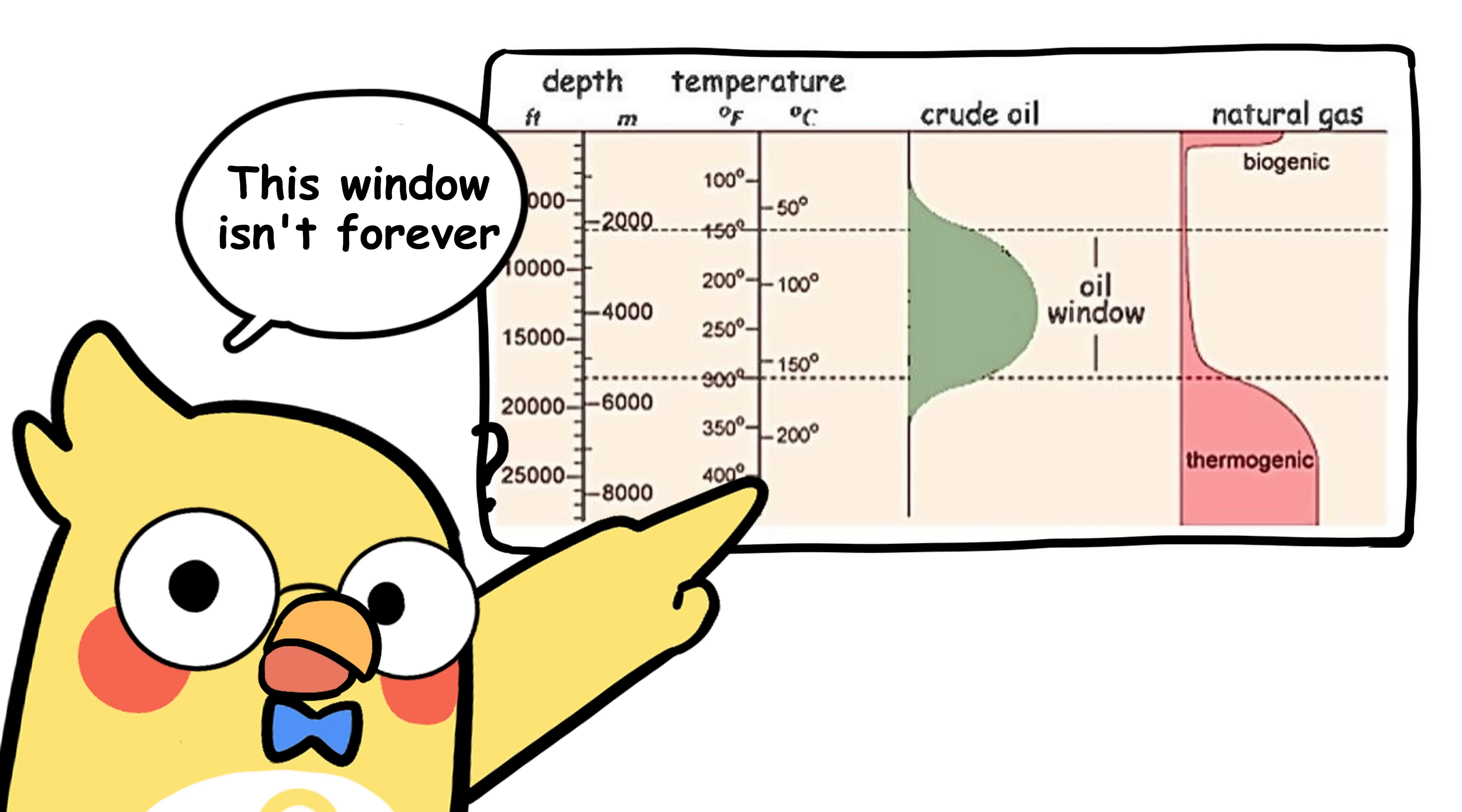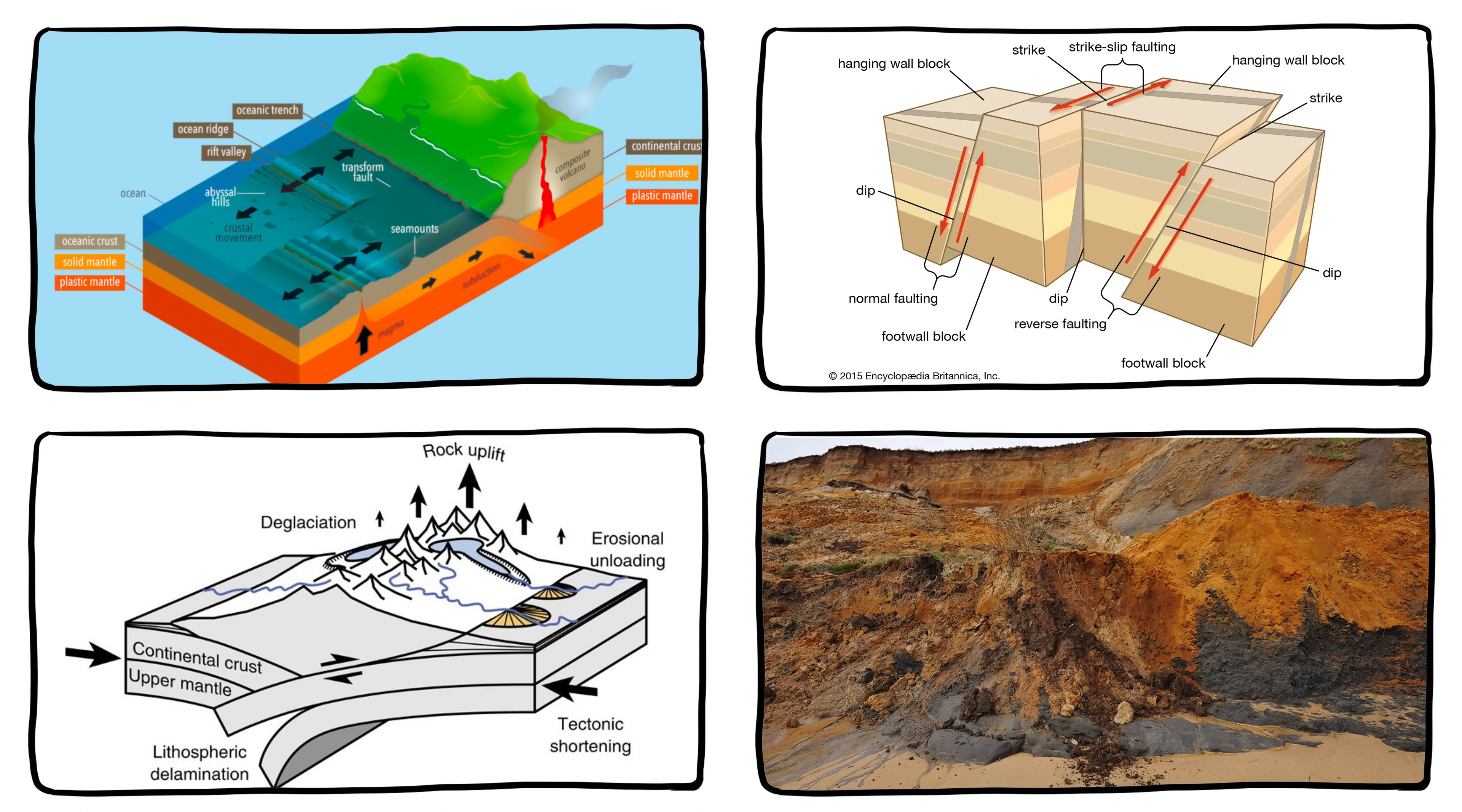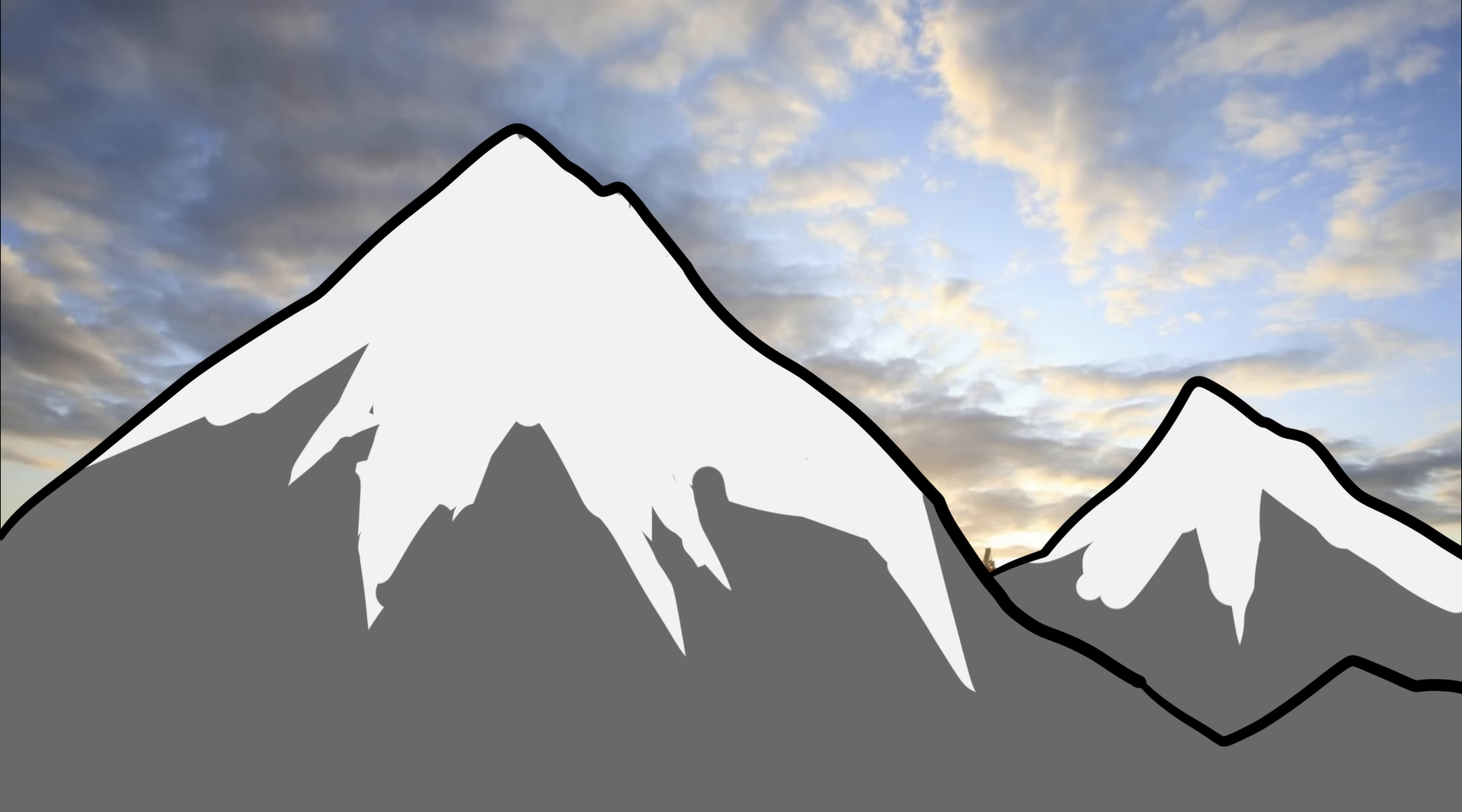And here's the kicker. This window isn't forever. Geological movements, faulting, uplift, and erosion can shift the location of oil reserves over time. Some oil fields might have been perfect before a mountain showed up on top.